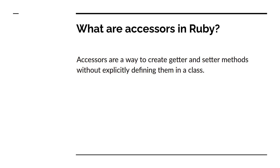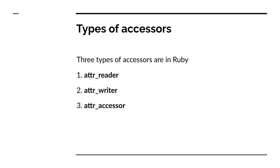There are three types of accessors: attribute reader, attribute writer, and attribute accessor. For this video, our goal is to understand attribute reader in Ruby only. In the next coming lectures we will also cover the other two types: attribute writer and attribute accessor.